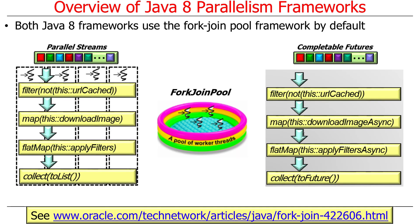Both Java 8 parallel frameworks use the fork-join framework by default. The main difference is that parallel streams essentially have to use the common fork-join pool — workarounds exist but they're hacky — whereas completable futures have explicit APIs allowing you to use other thread pools if desired.